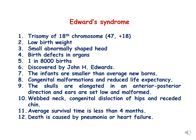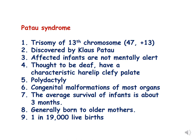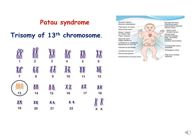The last syndrome discussed is Patau syndrome, caused by trisomy of the 13th chromosome, discovered by Klaus Patau. Affected infants are not mentally alert and are thought to be deaf. They have polydactyly, and the frequency is generally 1 in 19000 births, generally born to older mothers. Here you can see the karyotype of Patau syndrome showing trisomy of the 13th chromosome, and the child suffering from Patau syndrome. These are the syndromes we discuss in aneuploidy in humans, and in plants we discussed Datura.